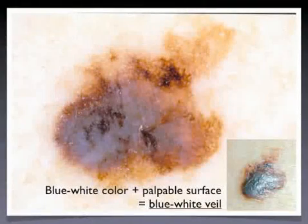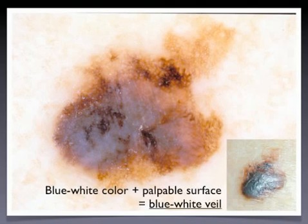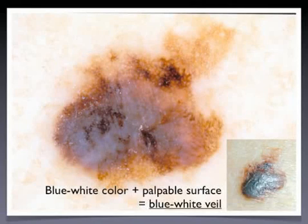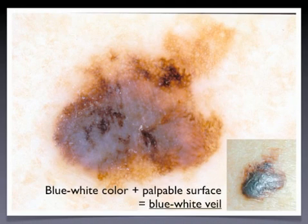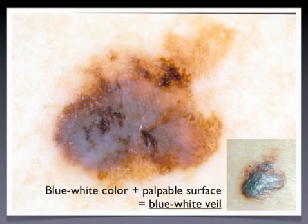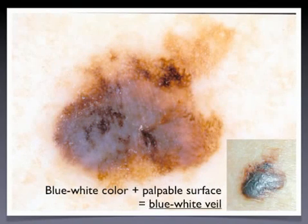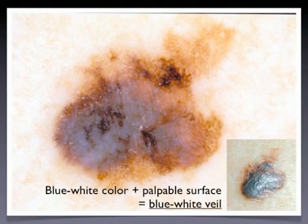Clinical palpability is the most important criterion to differentiate regression structures from blue-white veil. The latter is an area of compact blue-white color corresponding to an elevated portion of the lesion. Histopathologically, blue-white veil correlates to a thickened epidermis and the proliferation of melanoma cells intermingled with melanophages within the dermis. The different histopathologic correlate is the reason why it is important to differentiate blue-white veil from regression structures, as the former is associated with melanomas of higher thickness.